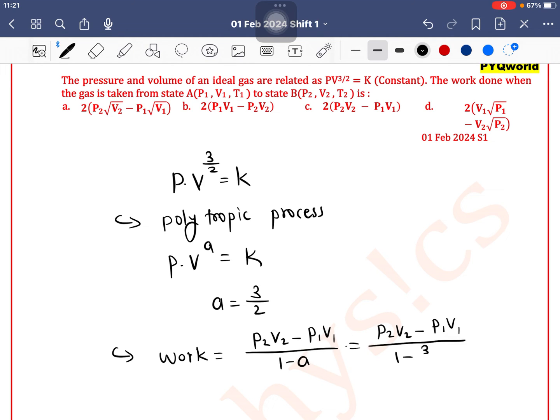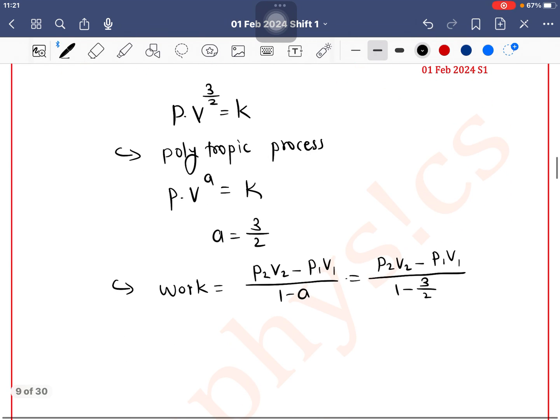A is 3 by 2, so 1 minus 3 by 2 is minus 1 by 2. So P2 V2 minus P1 V1 by minus 1 by 2 which is equal to 2 into P1 V1 minus P2 V2.